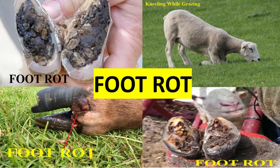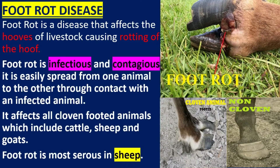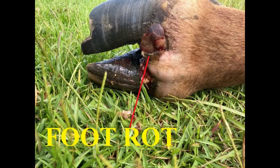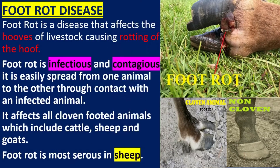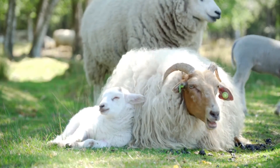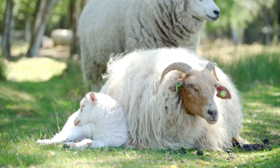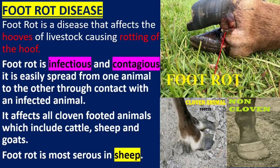Foot rot disease: the symptoms, the predisposing factors, and control measures. Foot rot is a disease that affects the hooves of livestock, causing rotting of the hoof. It is infectious and contagious and is very serious in sheep. It affects all cloven-hoofed animals such as cattle, sheep, and goats.